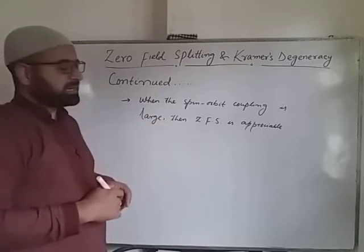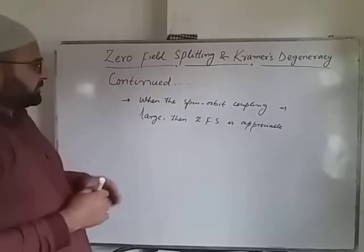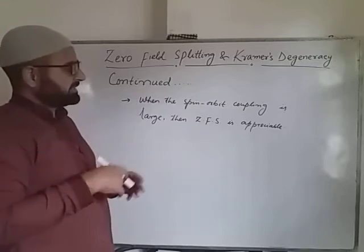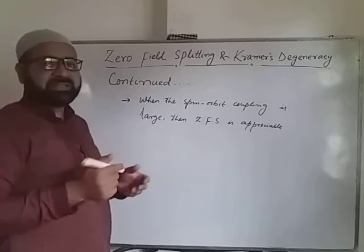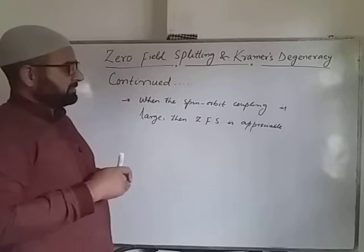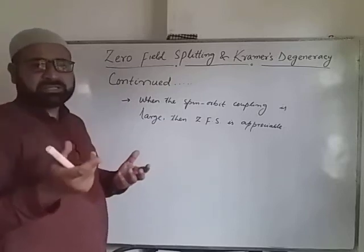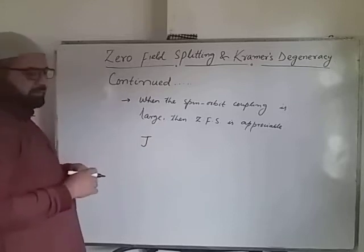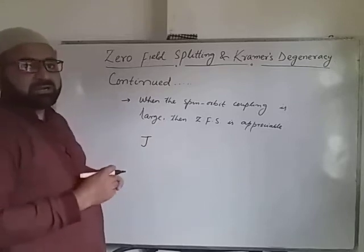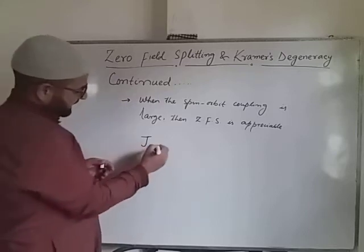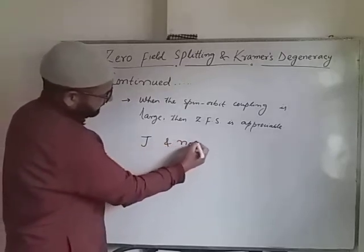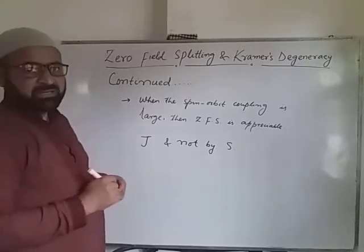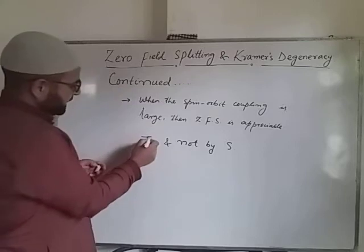When there is spin-orbit coupling, the spin angular momentum of the system will not be simply represented by S alone, but will actually be represented by the total angular momentum, which is represented by the quantum number J. J will represent the total angular momentum of that system, and not by S, which we were using in the case where there was no spin-orbit coupling.